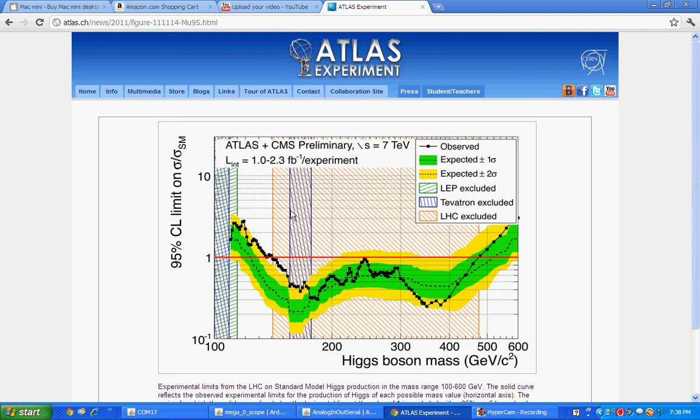Anyways, what this graph really means is this: this solid line here is our actual data, this dotted line here is what they would expect if the Higgs boson didn't exist. And then this is what we'd expect if the Higgs boson didn't exist with a one sigma probability, and the yellow is what we'd expect for the Higgs to not exist at a two sigma probability.